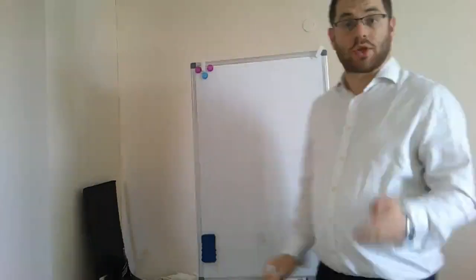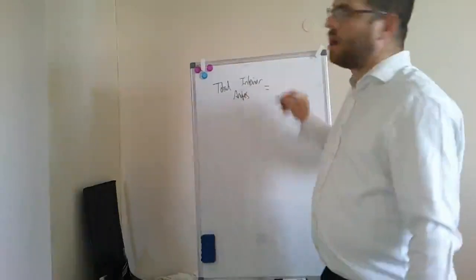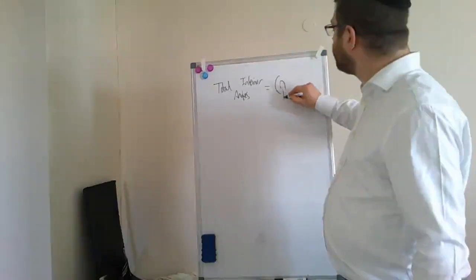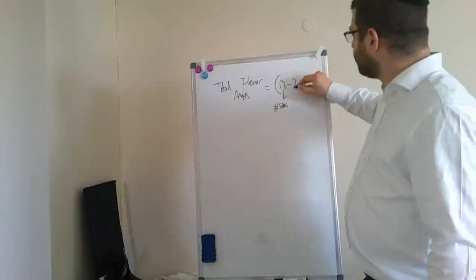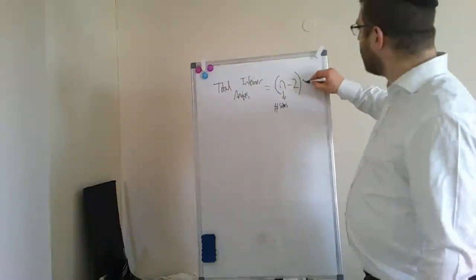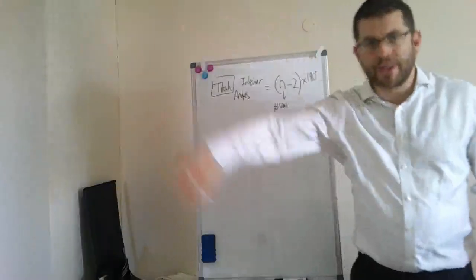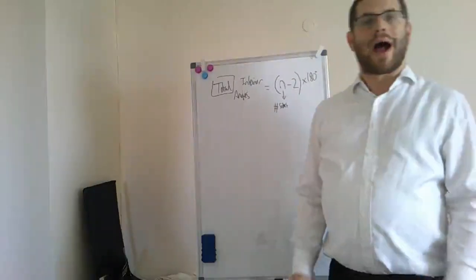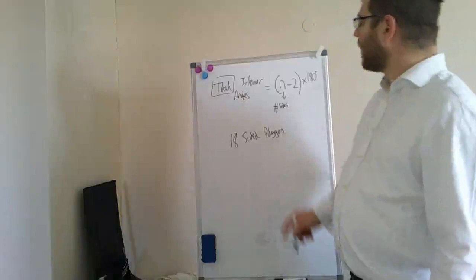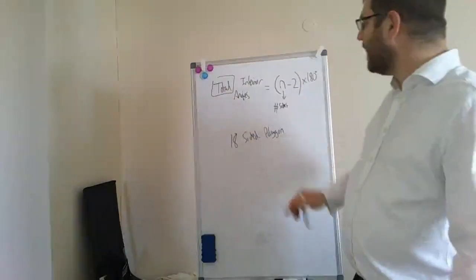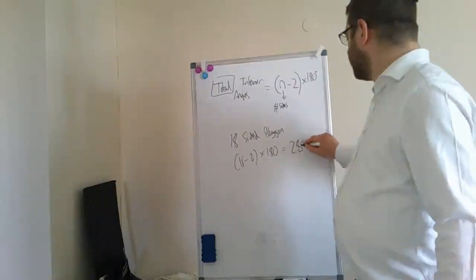That gives us the golden formula for this topic — write this down. The total interior angles in a polygon equals (n minus 2) multiplied by 180, where n is the number of sides. This works whether the polygon is regular or irregular. It tells you every single angle added up together — not just one angle. For example, for an 18-sided polygon: 18 minus 2 is 16, multiplied by 180, which gives 2880 degrees.